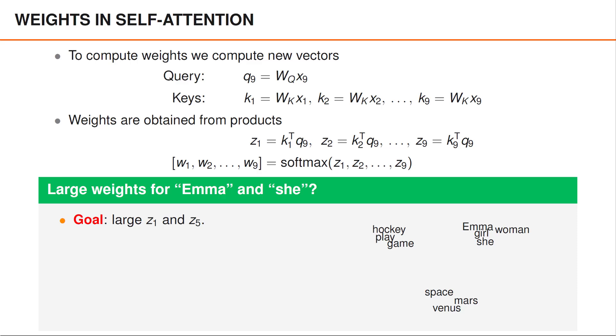Now the input to our self-attention layer is a set of vectors also known as word embeddings, and people have seen that words that are related tend to cluster. For instance, words like hockey, game and play tend to appear close together.